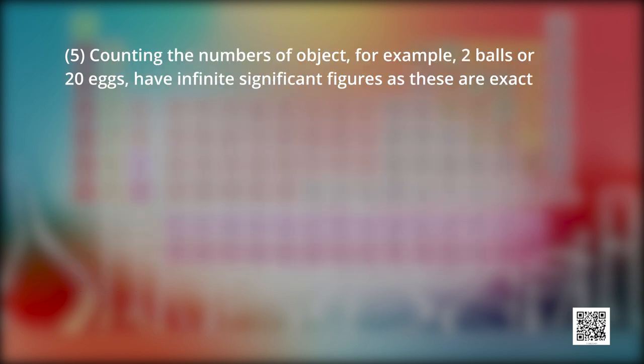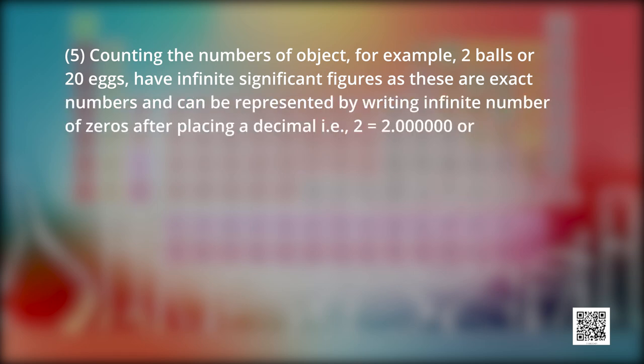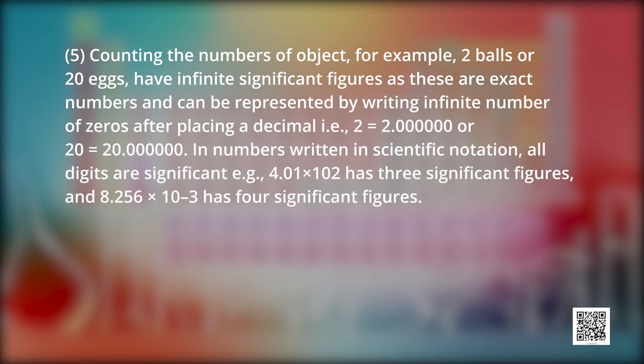The fifth rule says that the exact numbers obtained by counting the numbers of the object have infinite significant figures. For example, two balls or 20 eggs have infinite significant figures. As 2 and 20 are exact numbers and can be represented by writing the infinite number of zeros after placing a decimal, like 2.000 or 220.000 infinitive. Friends, let's see how to determine the significant figures in the result of mathematical operations.